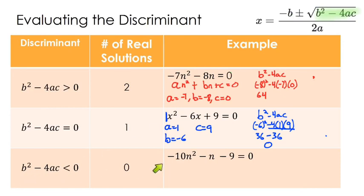And let's jump down to our third example. In our third example, we've got an a value of negative 10, we've got a b value of negative 1, and I'm going off the page a little bit, but a c value of negative 9.